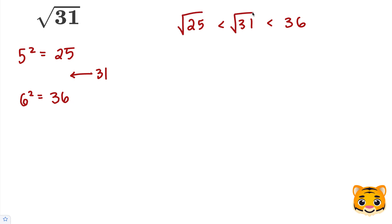Now, we can take the square root of all of these values in our inequality. The square root of 25 is 5, because 5 squared is equal to 25. The square root of 36 is 6, because 6 squared is 36. Now we can see that the square root of 31 lies between 5 and 6.